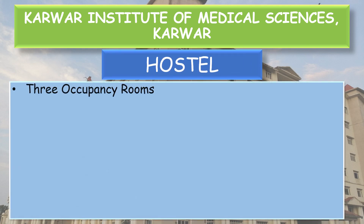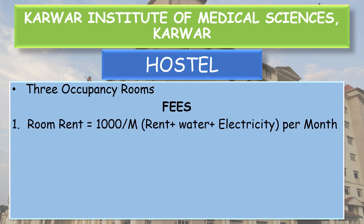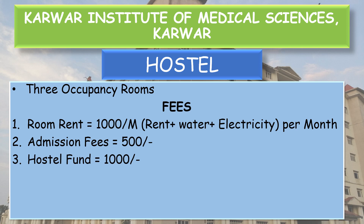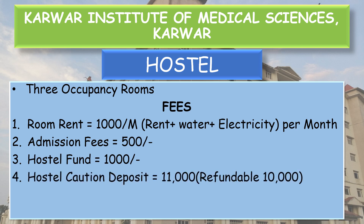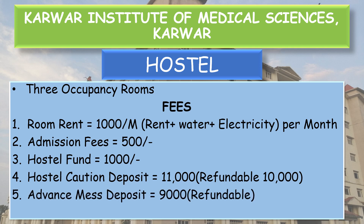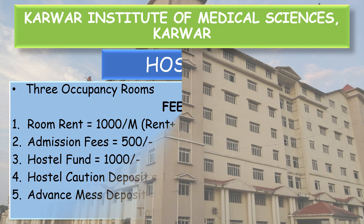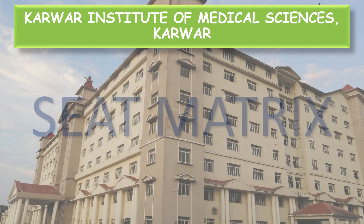Now coming to the hostel facility. Three-occupancy rooms are allotted here. Room rent is Rs. 1,000 per month, which includes rent, water, and electricity. Admission fee is Rs. 500, hostel fund Rs. 1,000, and hostel caution deposit Rs. 11,000 — of which Rs. 10,000 is refundable — and mess deposit which is refundable is Rs. 9,000. So the total is Rs. 22,500.